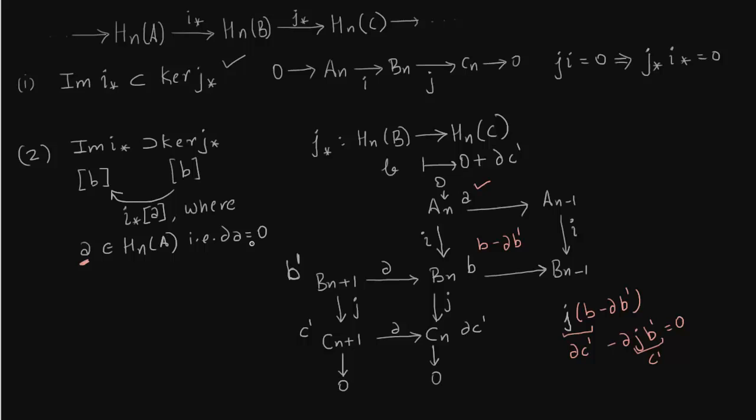Now we still have to show that it is in HnA but we have found an element a in An, which we wanted. Now we have to show that it lies in HnA and for that purpose we have to show that δa = 0.